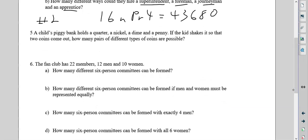Number five. A child's piggy bank holds a quarter, a nickel, a dime, and a penny. So there's four coins. If the kid shakes it so two coins come out, how many different pairs of different types of coins are possible? Well, there's four coins, we're going to have two come out, order doesn't matter. A quarter followed by a nickel is the same as a nickel followed by a quarter. So this is going to be NCR. There's six different ways the coins could come out.